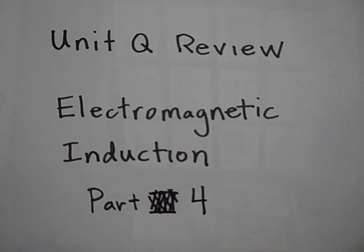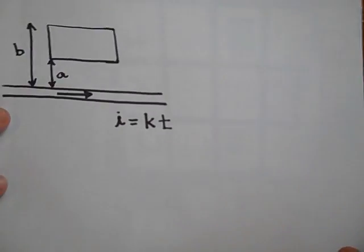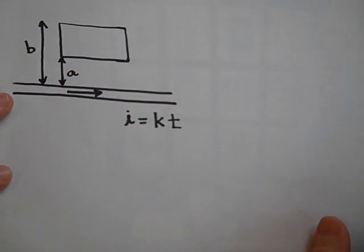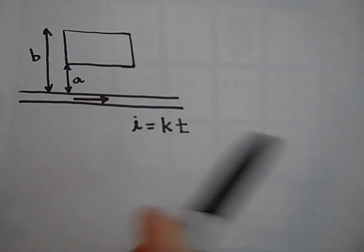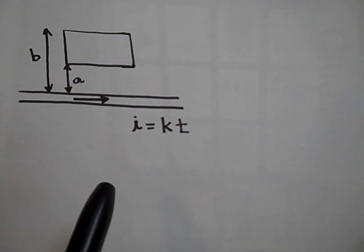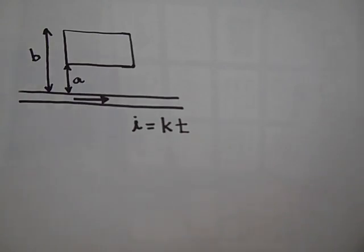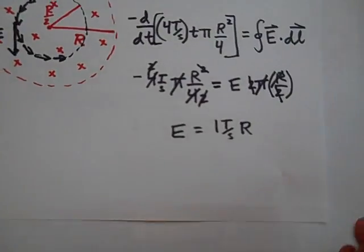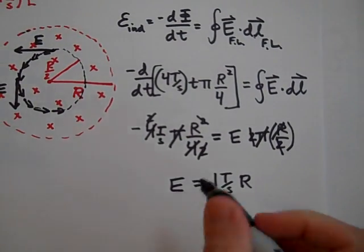Here's the unit Q review part 4 — new batteries in the video camera. By the way, that last one was a negative that ended up with a negative. I'll probably put that on as an annotation, but that's actually a negative if you're wondering where the negatives are.